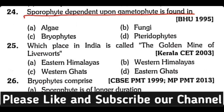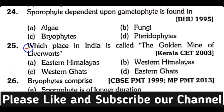Question number twenty-four: sporophyte dependent upon gametophyte is found in — algae, fungi, bryophytes, or tracheophytes? The correct answer is option C: in bryophytes, the sporophyte is dependent on the gametophyte, and the gametophyte generation is dominant.